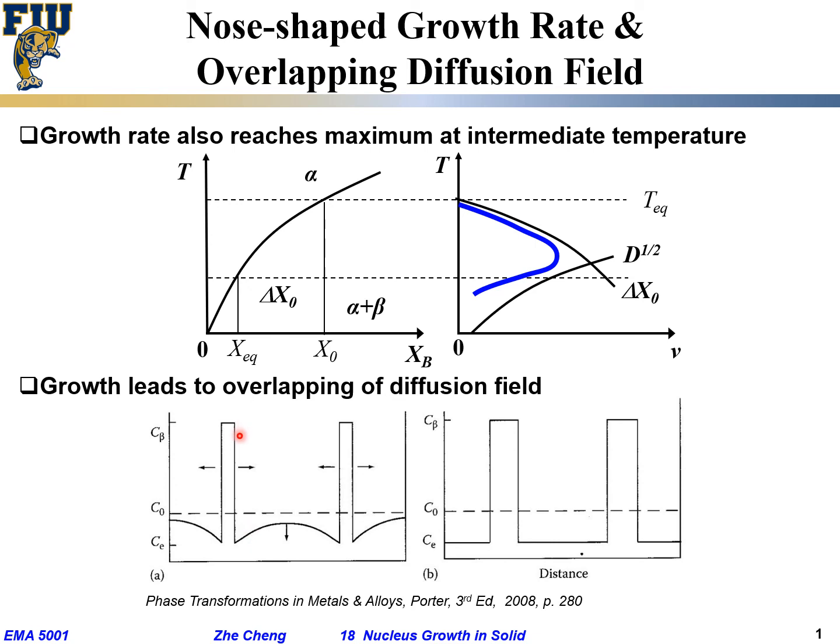As the beta phase grow and grow, the neighboring diffusion field would overlap. As a result, the concentration in between would go down, because initially C zero, eventually it has to be Ce for equilibrium concentration. When everything reaches equilibrium, we have the concentration profile like this: Ce for alpha phase, then step up into C beta, and then step down into Ce again. That's the reason you typically would observe the so-called lamellar structure, even for precipitation case. The closely spaced lamellar structure for precipitation case.